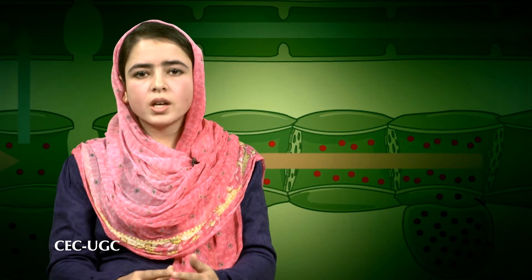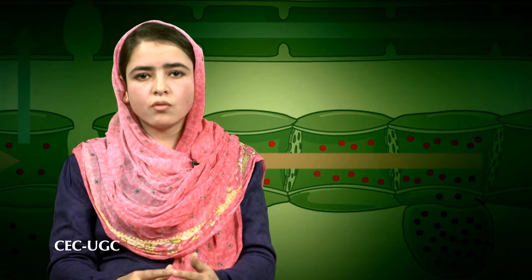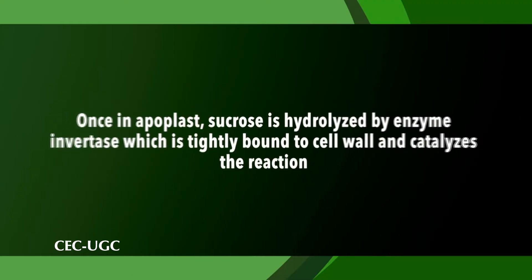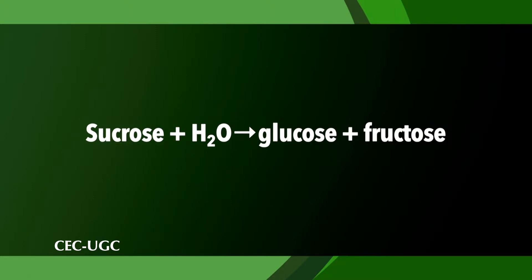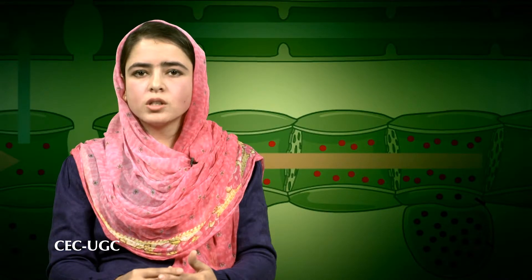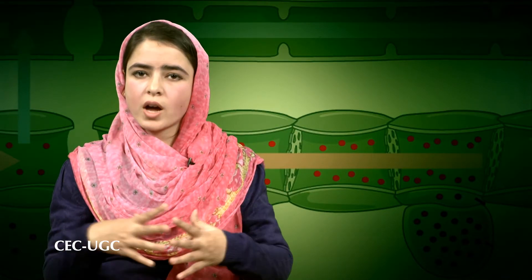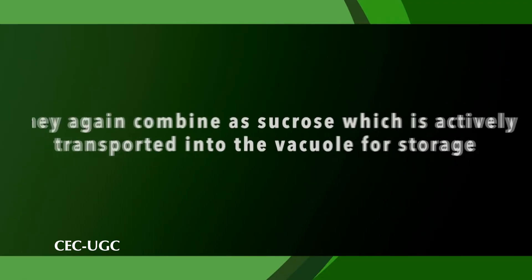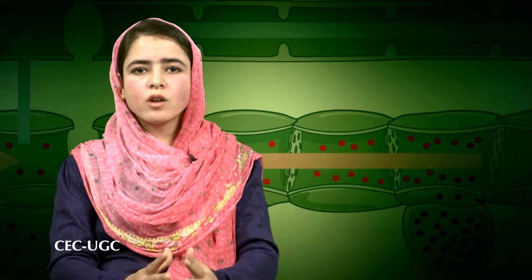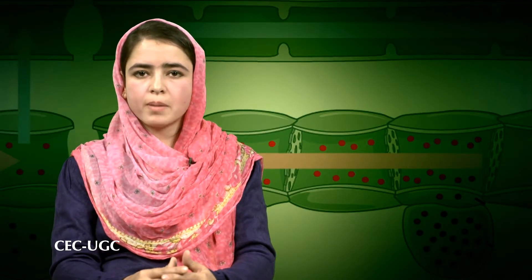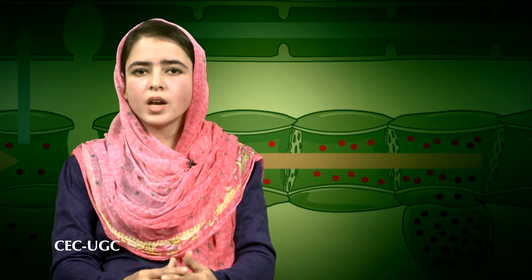This type 2 arrangement is typical of developing seeds and root tips and appears to be the most common in apoplastic phloem unloading. Release is insensitive to metabolic inhibitors and therefore does not involve any energy-dependent carrier. Once in the apoplast, sucrose is hydrolyzed by the enzyme invertase, which is tightly bound to the cell wall, catalyzing the reaction: sucrose + water → glucose + fructose. This reaction is essentially irreversible, and the hydrolysis products glucose and fructose are actively taken up by the sink cells, which combine them again as sucrose and actively transport it into the vacuole for storage.